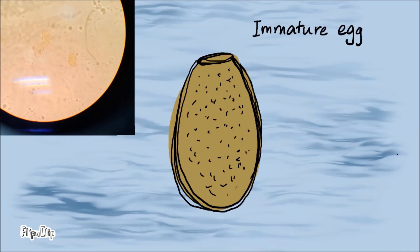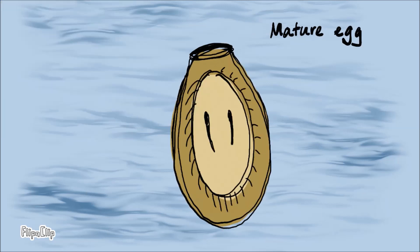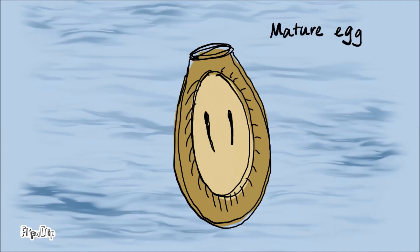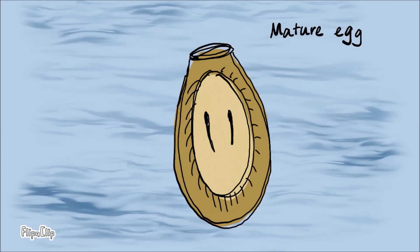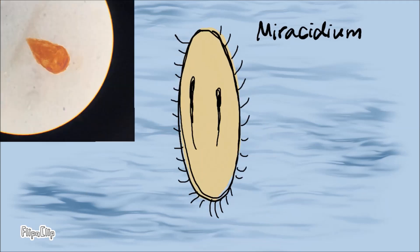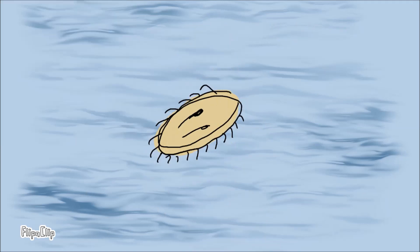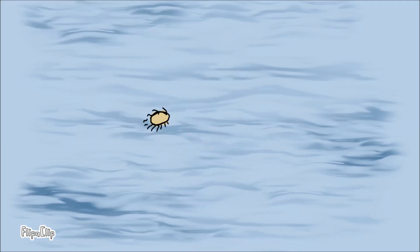Immature eggs reach fresh water via the stool and then become embryonated in the water. With suitable temperature, pH, and amount of oxygen in the water, the eggs will develop to have larvae in them. The larvae are called miracidia. 9–15 days later, the eggs will hatch and release miracidia.